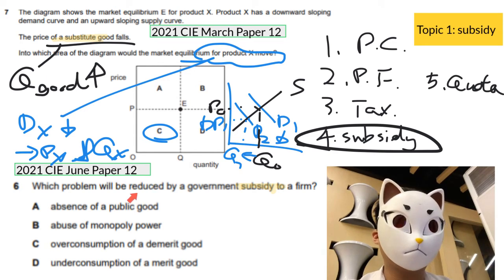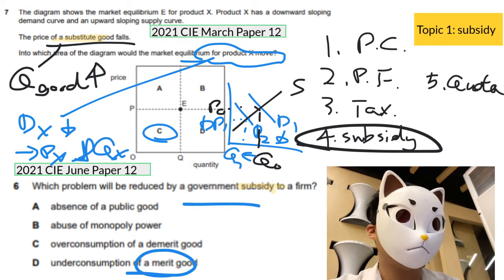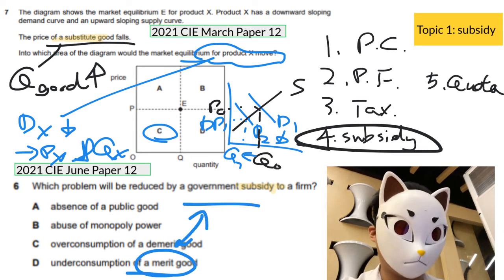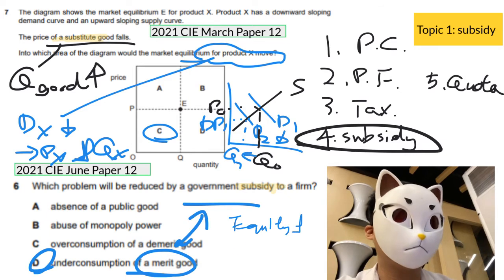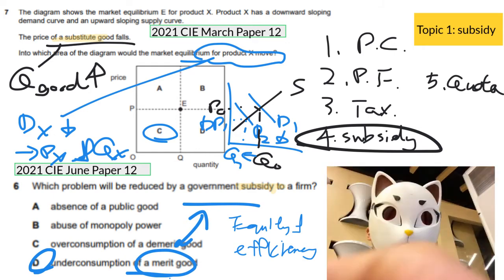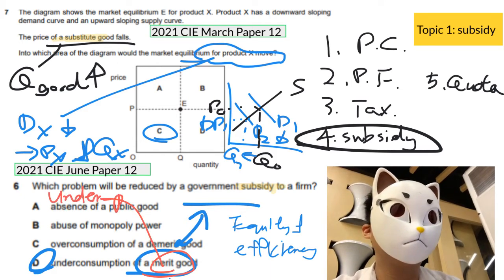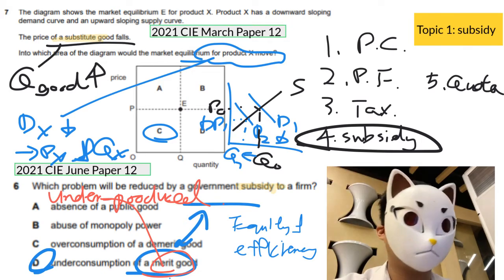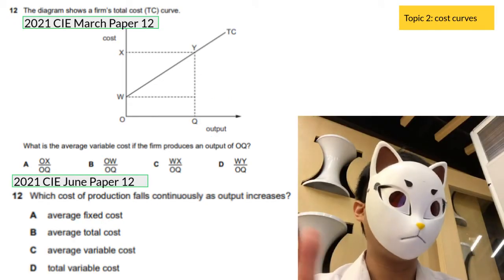Another question was quite tricky: which problem will be reduced by government subsidies? This is about the under-consumption of merit goods. It tries to link government subsidy to the topic of equity and efficiency. Merit goods are always under-produced, and they will only reach the efficient level with a government subsidy. Remember: subsidy is a very hot topic.